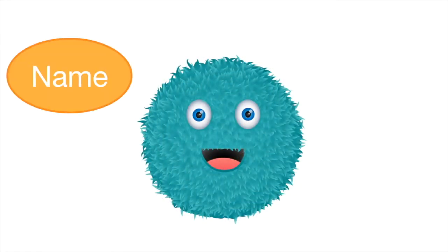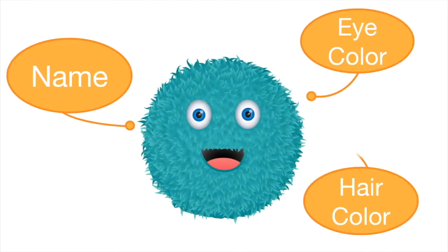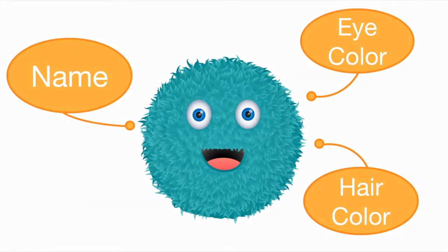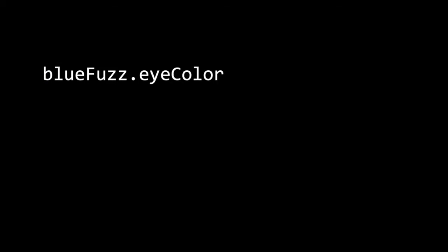Let's think about how strings work in programming. We can use a video game as an example and think about how a game developer can control what the player sees. A character's name, eye color, and hair color are all stored as strings. This makes it easy for a programmer to know or change what variables represent specific information in the program. A programmer working on the game could type in the variable for a character's eye color, for example,